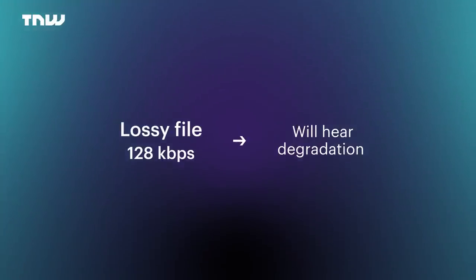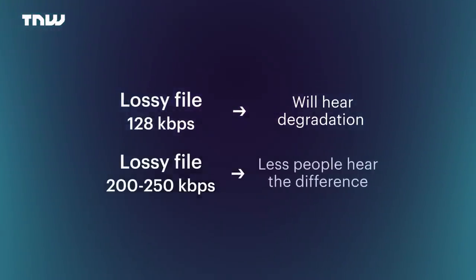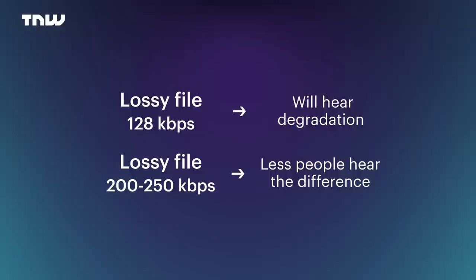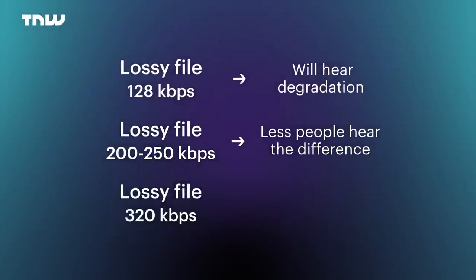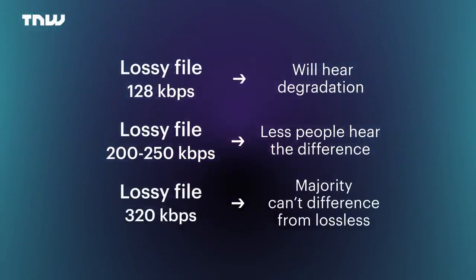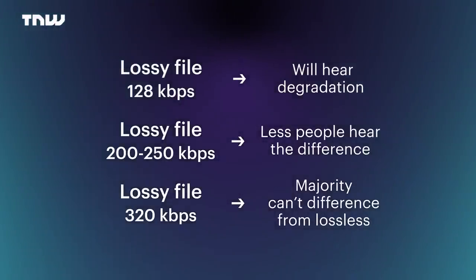But as the quality of the lossy music file rises to around 200–250 kbps, fewer people will be able to tell the difference between that and a lossless file. At the top end of MP3 — 320 kilobits per second — most people would really struggle to tell the difference from a lossless file. Yes, if you have fantastic equipment and really sit down and listen hard, you can tell. But for the majority of people, there is not a huge disparity between a 320 kbps MP3 and a lossless FLAC file.